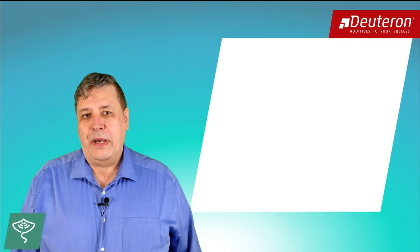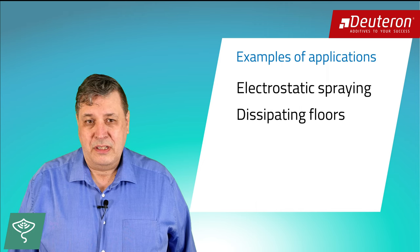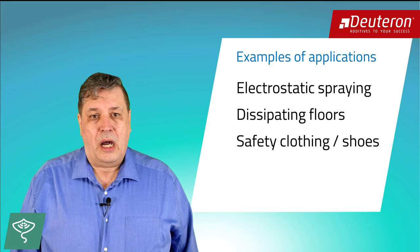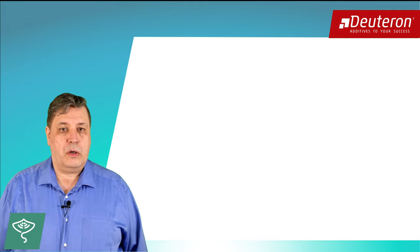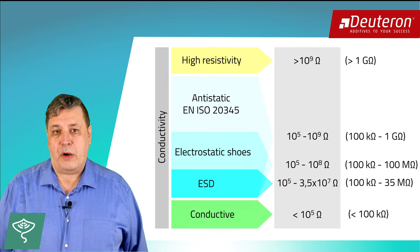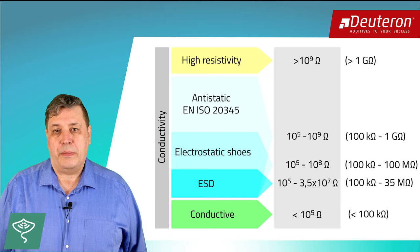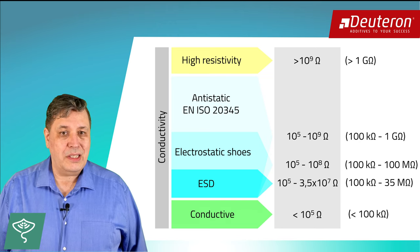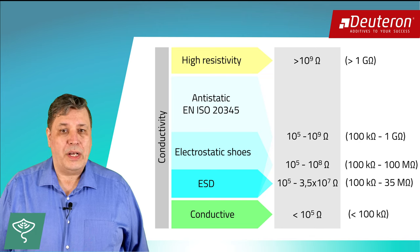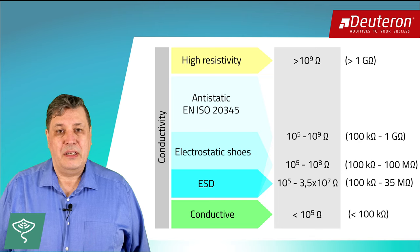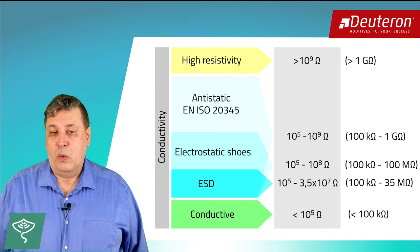These products are suitable for many applications. For example, electrostatic spraying, dissipative floors — for example in industry, electronics and hospitals — safety clothing such as shoes, and common PU casting resins and foams. Important is the definition of electrostatic or conductivity. Real insulators have resistances above 1 teraohm, but insulating properties start from 1 gigaohm. Overall, the antistatic properties are in the range between 100 kiloohm to 1 gigaohm. The requirements for electrostatically equipped shoes are in the resistance range of 100 kiloohm and 100 megaohm. Electrostatic dissipating is defined between 100 kiloohm and 35 megaohm. Conductivity is defined at resistivities below 1 megaohm.